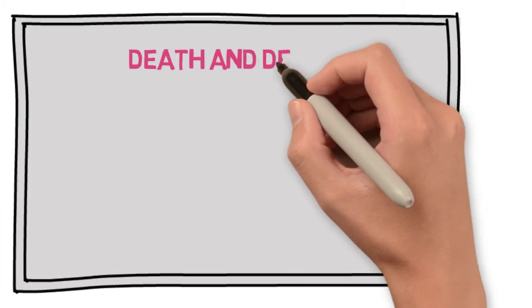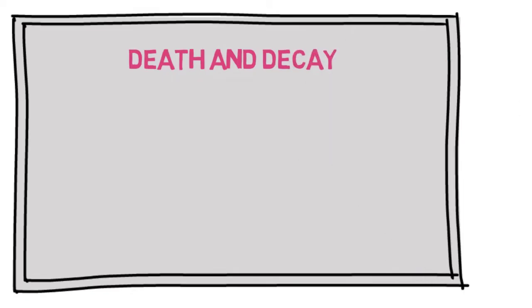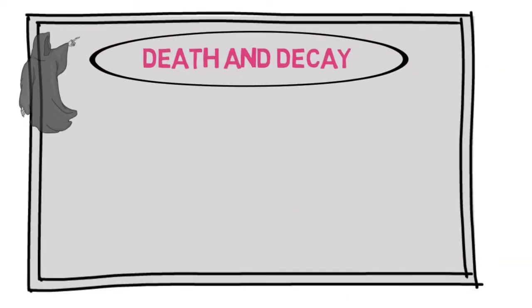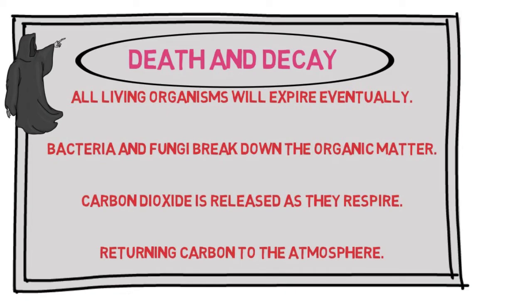All living things eventually die. Death and decay are a feature of the carbon cycle. Microorganisms break down organic matter. And in so doing respire, releasing that carbon in the form of carbon dioxide back to the atmosphere.